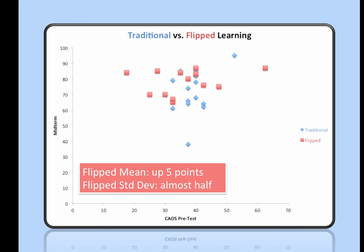So even though the flipped students started with a little disadvantage—or at least that's what's implied by the pre-test scores—they came out on top on the midterm scores.